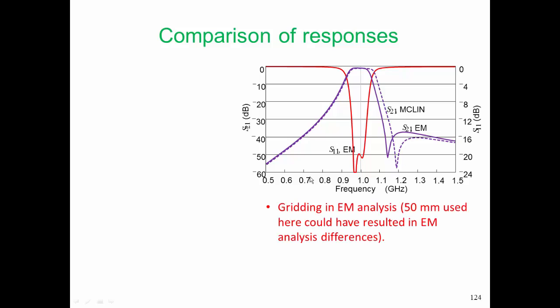With the EM analysis, there are some subtle differences with the MCLIN-based analysis. With the MCLIN-based analysis, we could specify the dimensions exactly. Of course, we're not going to be able to take into account variations due to etching errors - they're probably of the order of the thickness of the metal, six microns. So we'll have a little bit of a rough edge on our microstrip line. That seems very small, but it's enough to affect things very slightly, especially the loss.